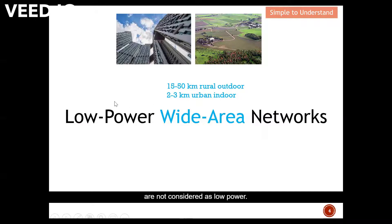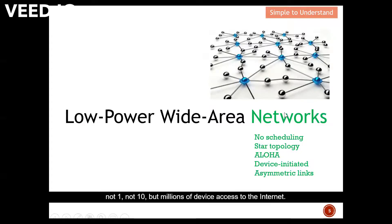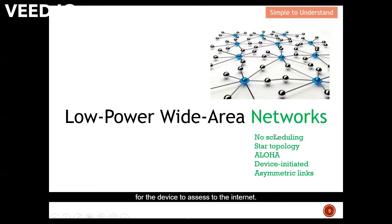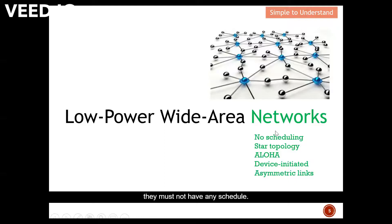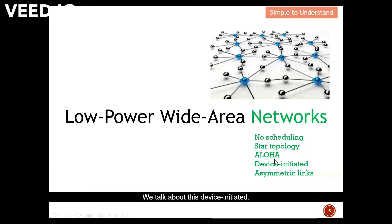Network means that the device is able to access the internet — not one, not ten, but millions of devices accessing the internet. There must not be any schedule, meaning when the device wants to access the internet it must be able to do so instantly. It is also preferred to configure in a star topology. ALOHA, in simple words, means random access — when the device wants to access the internet it must be able to access instantly.